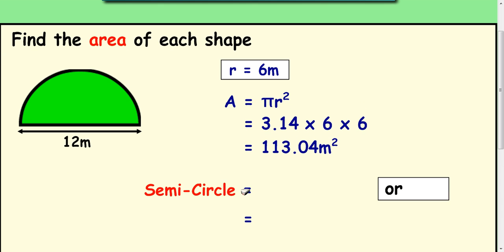Now, to work out a semicircle, basically just take your answer and half it. So divide by 2 or half it and you get your answer of 56.52.